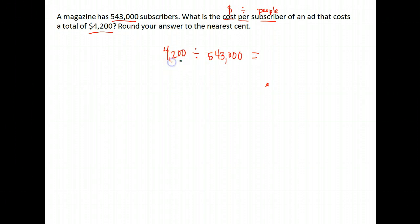Do that carefully. Make sure you put the $4,200 first, then push divide, then $543,000. When we do that, we get 0.0077348 and it goes on from there.